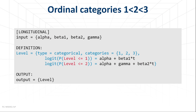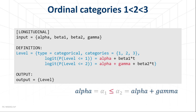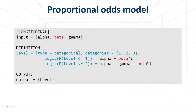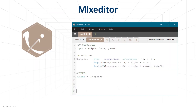If the categories are ordered, we use the cumulative probabilities and model the probability that the response is equal to or below a certain level. The intercepts must satisfy the ordering condition, so it is convenient to define them as alpha and alpha plus gamma. The beta parameters can be specific for each level, or equal if the proportional odds assumption is valid. Do not forget to use the MLX editor application to write MLxtran models — the syntax check will help you verify everything is correct before loading the model in Monolix.